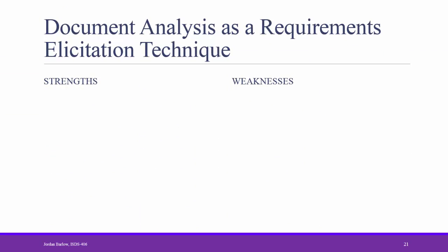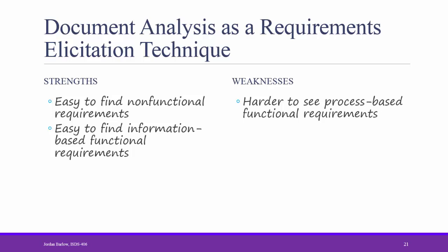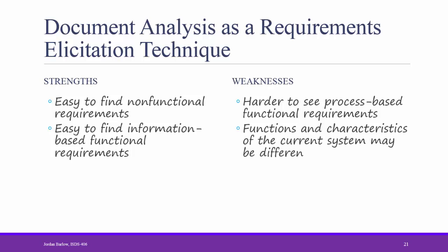To summarize document analysis: the strengths are that it's easy to find non-functional requirements and information-based functional requirements — looking at a form makes it easy to tell what information needs to be saved in a system. However, it's harder to see process-based functional requirements, since you may see what information needs to be stored but not what is done with it. Functions of the current system might differ from what is needed in the new system, so use document analysis to understand, not necessarily to define new requirements.